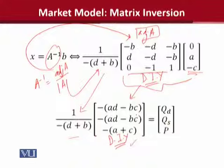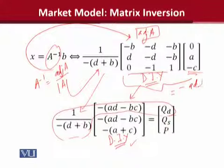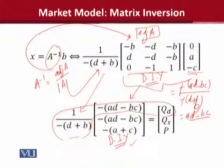Ab humme se QD aur QS aur P ki equilibrium values ko extract kar sakte hain. QD ki value, it will be equal to this. Hum isse ek dafa extract karke dekh lete. Minus minus jo hai, at the end we expect ke cancel out hoga. But let us write it once for the sake of clarity. So minus minus is cancelled out and the answer of QD is this, divided by D plus B. So this is QD.